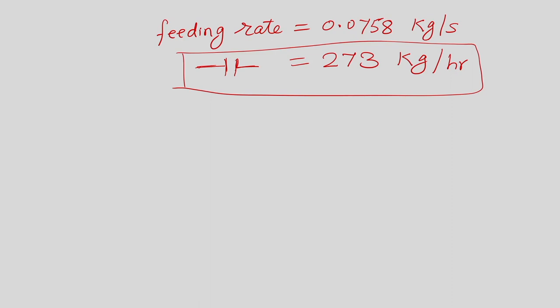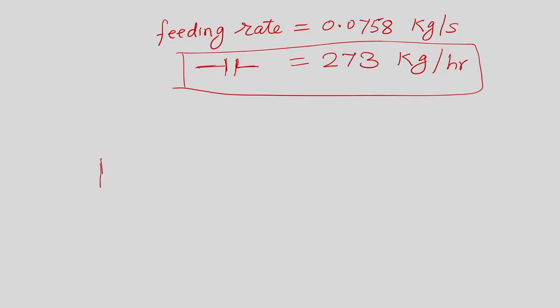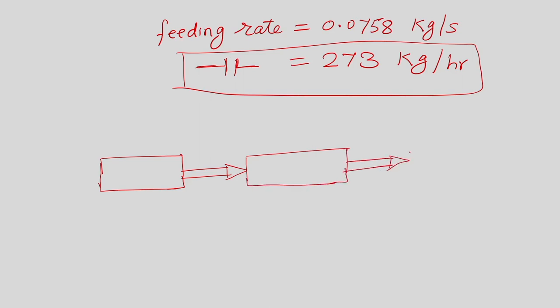Now that we understand all these values and how they were calculated, let us redraw the schematic from the beginning of the example. This will give a clear picture of the input required for the gasifier to produce a significant quantity of producer gas, and based on that gas — after cleaning and feeding into the engine — a significant amount of power can be produced. Let us redraw the schematic and complete it with the known and calculated quantities.